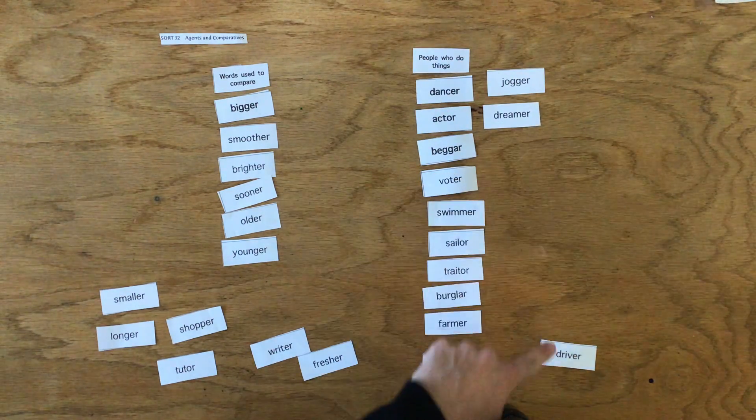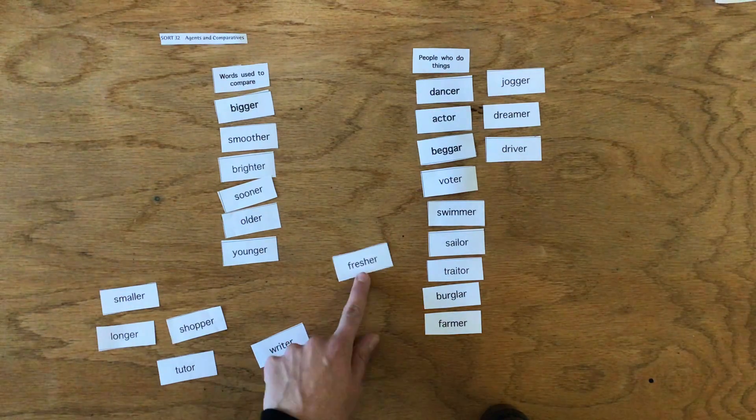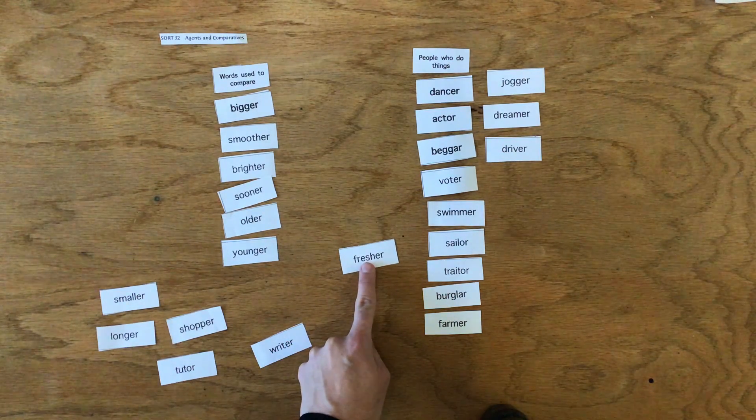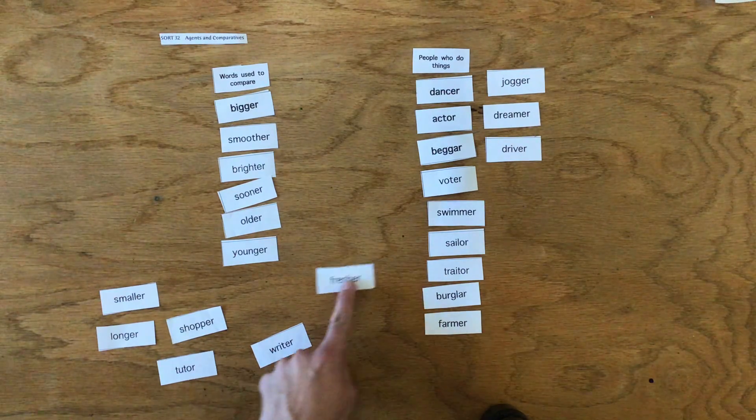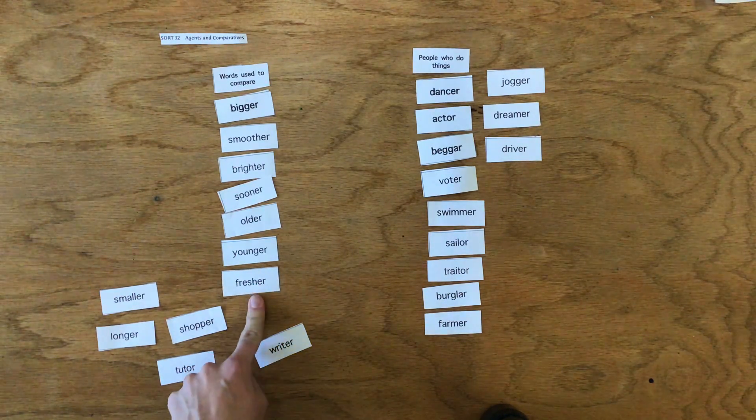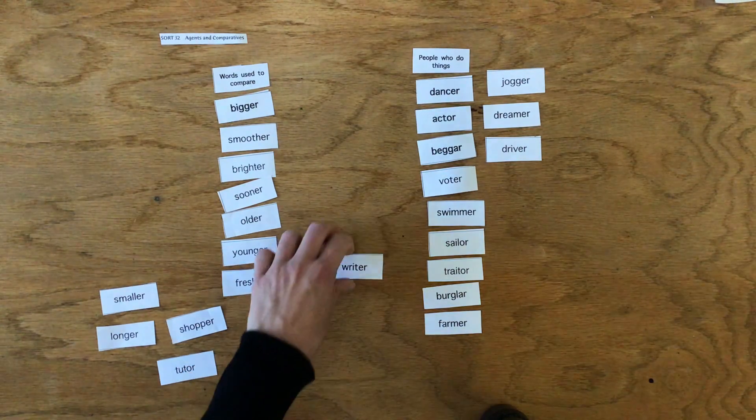Dreamer, somebody who dreams. Driver, somebody who drives. Fresher—somebody who freshes? Nah. Fresher would be an adjective. It's comparing, like, this banana is fresher than the old ones.